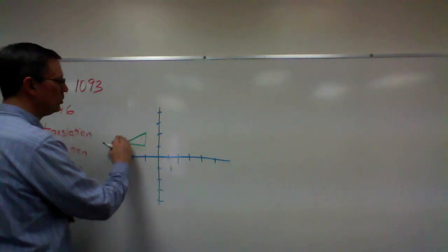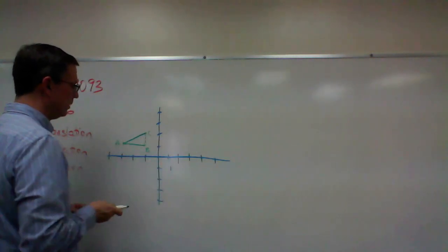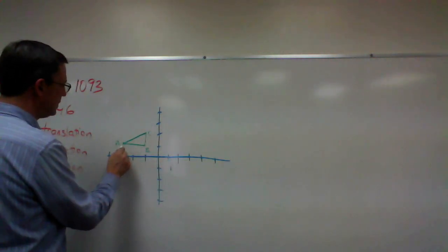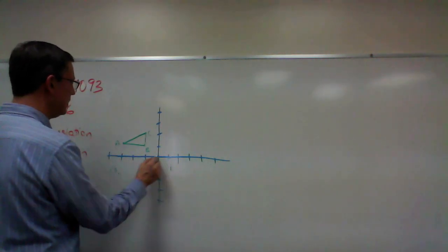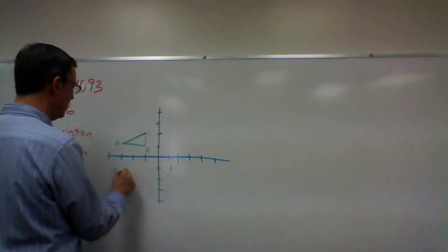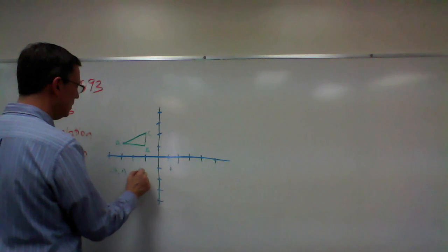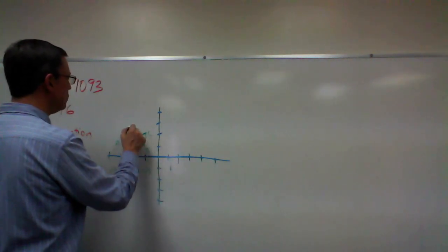I want to rotate it over to here. This has the point—this point right here is negative three, one. This is one, negative one. And then this one is negative one, two.